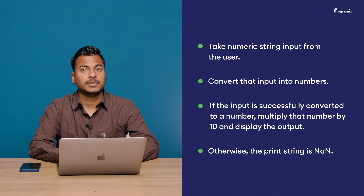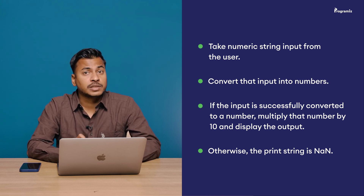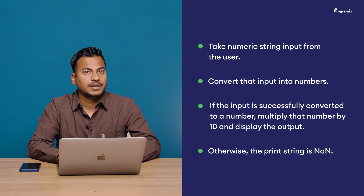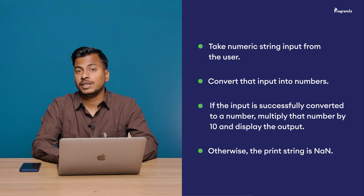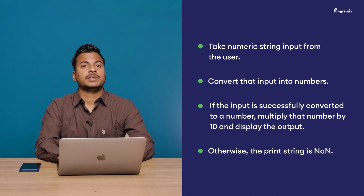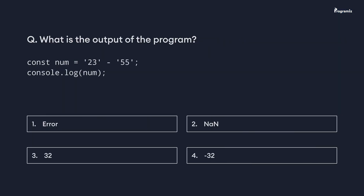To practice what we've learned, here's a programming task: take a numeric string input from the user, convert that input into a number, and if the input is successfully converted, multiply that number by 10 and display the output — otherwise print 'the string is NaN'. You'll find the answer in our GitHub repository linked in the video description. It's also time for the programming quiz: what is the output of the program shown on screen? Comment your answer below. Happy programming!